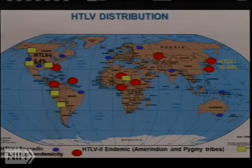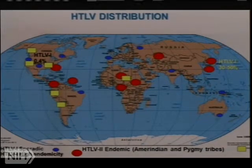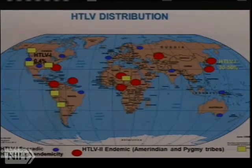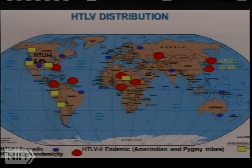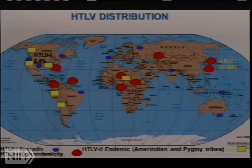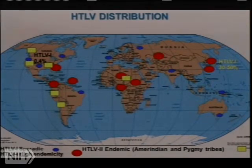We'll do this the virology way: one person, ten people, a hundred, a thousand, a hundred thousand, a million, ten million, a hundred million. It's about thirty to thirty-five million. You guys are all virologists because you're within a log.